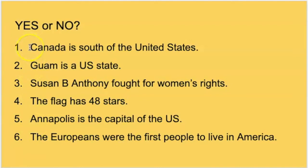Now let's go over the answers. Canada is south of the United States? No — Canada is north of the United States. Guam is a U.S. state? No, Guam is a territory. Number three, Susan B. Anthony fought for women's rights? Yes, she did. Four, the flag has 48 stars? No, the flag has 50 stars. Five, Annapolis is the capital of the United States? No — Washington D.C. is the capital of the United States; Annapolis is the state capital of Maryland. Six, the Europeans were the first people to live in America? No — the American Indians or Native Americans were here first.